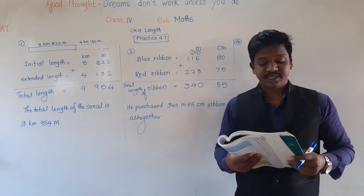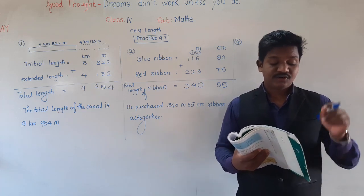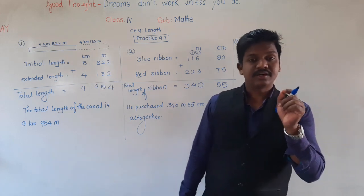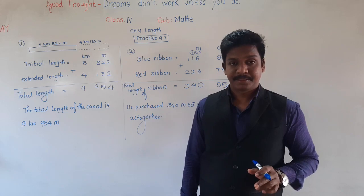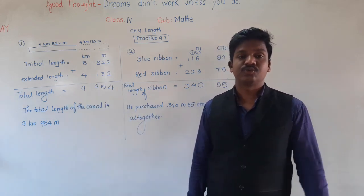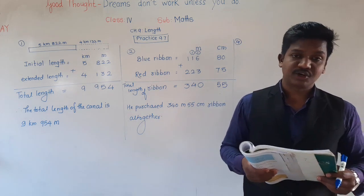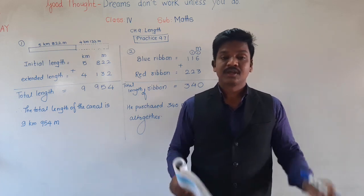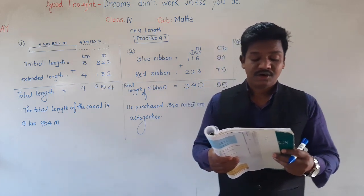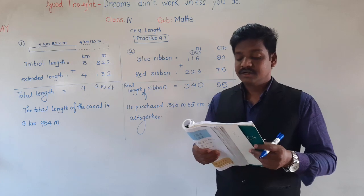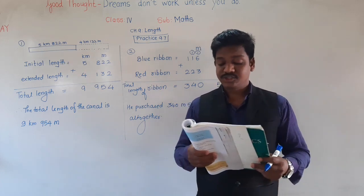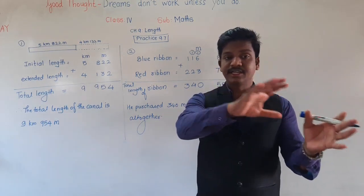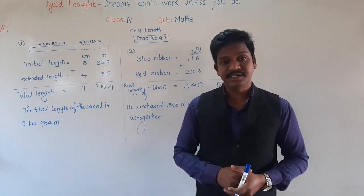4th problem: an 8 kilometer 428 meter long road was to be built — meaning there was a plan to build this road. Out of this, 5 kilometer 964 meter have already been built. So, what is the length of the remaining road that has to be built? Out of 8 kilometer 428 meter, 5 kilometer 964 meter was already built, and we need to find the remaining road.